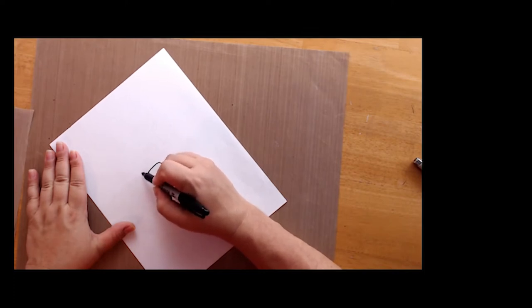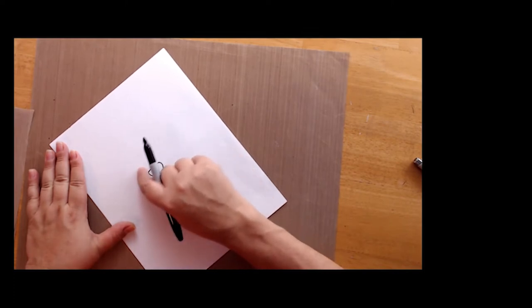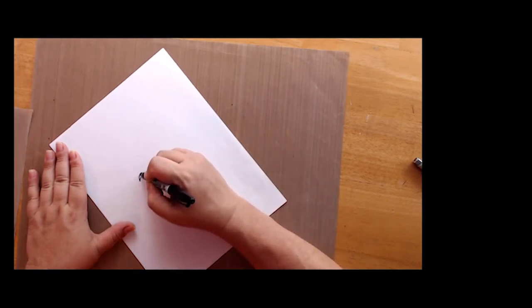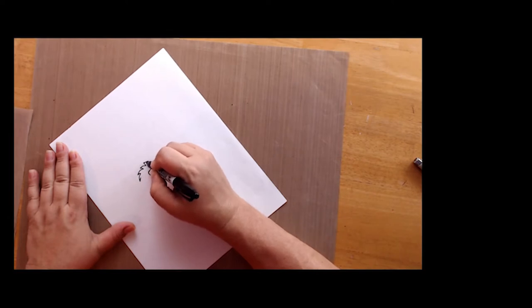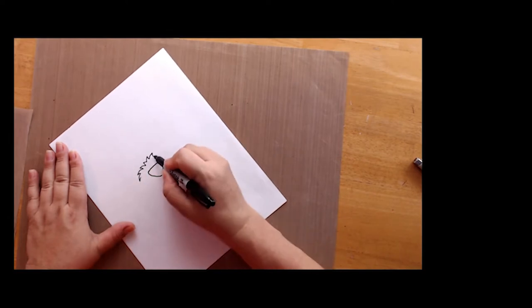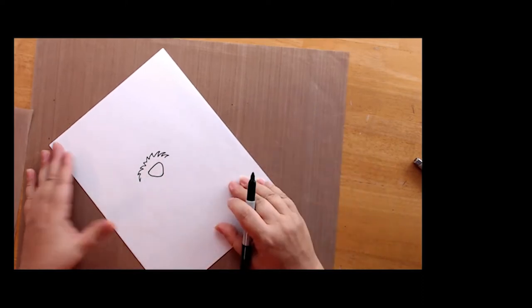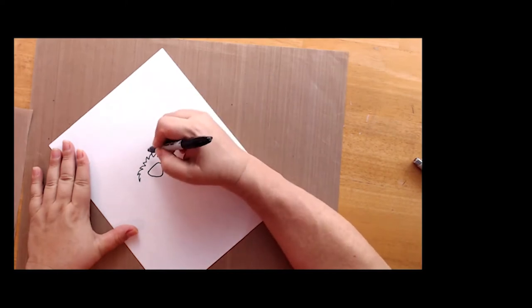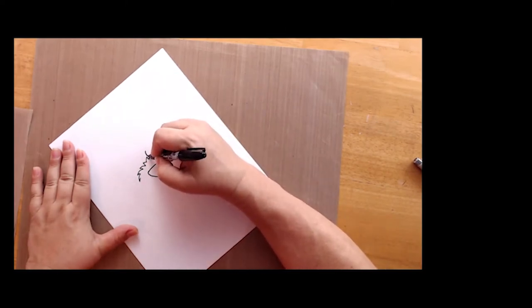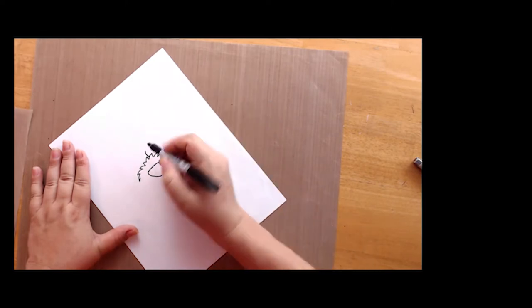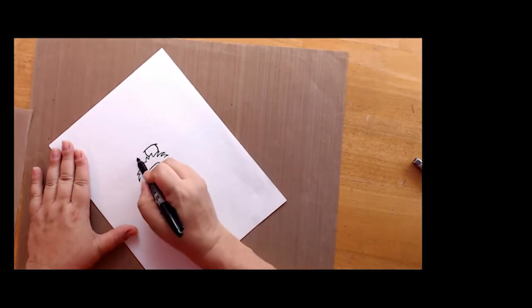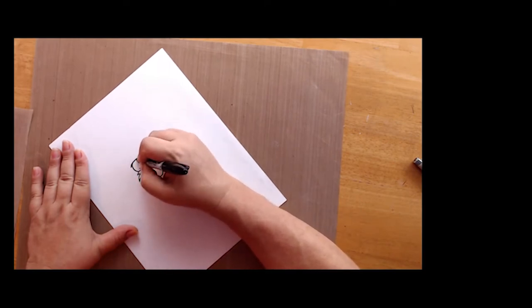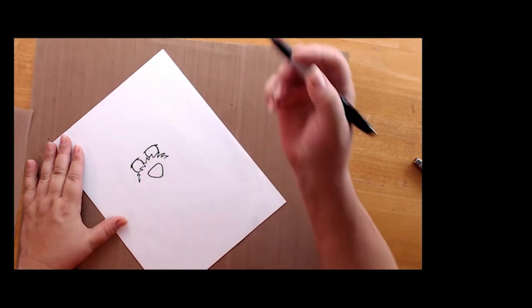And we're going to do this just above his nose. We're going to do a ridge of hair. So let's see what we can do here. It's going to be kind of spiky here like that. And then we'll make his features.